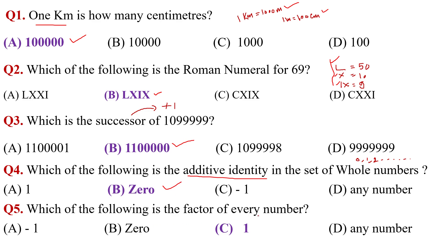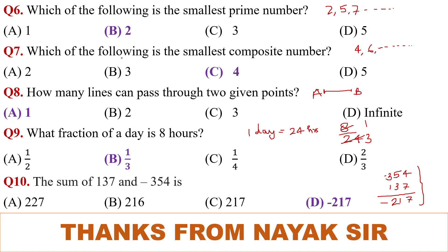Which of the following is the factor of every number? Yeah, everybody knows one is the factor of every number. Question number six, which of the following is the smallest composite number? A number which has more than two factors. The first number is four, so it is the smallest. Option C is correct.